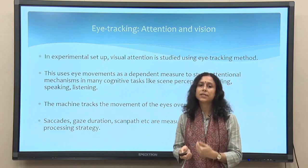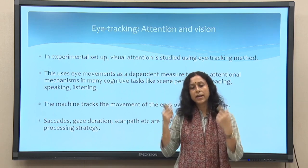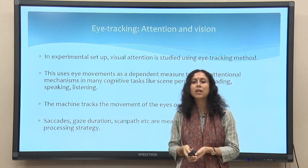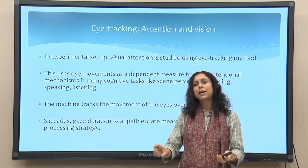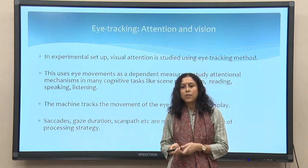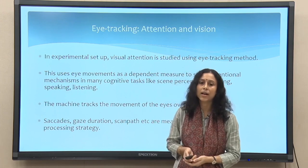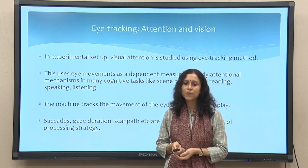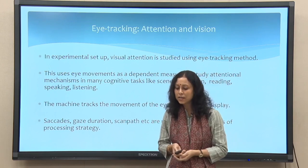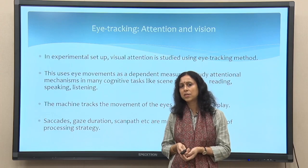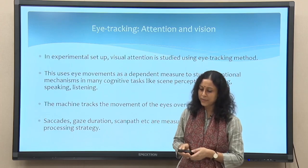Typically, if it is a head-mounted eye tracker, it will be placed on the head of the person with some kind of glass in front of the eyes. There are also eye trackers that are simply placed on a table and track eye movement. While we look at a particular object, the eye tracker tracks the movement of the eyes and gives us output. Typical experimental setups used include scene perception, reading, speaking, listening, comprehension, and production of various linguistic types.